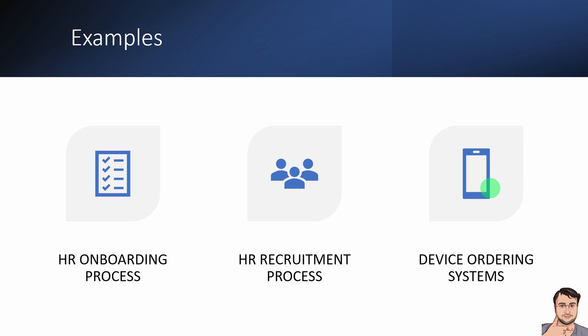The third example is device ordering systems. For instance, a user is ordering some devices for the organization and it has to pass through some processing: IT admin processes, then the budget is approved, and after that the device is sent to the end user. This kind of process you can design with the help of model driven app.